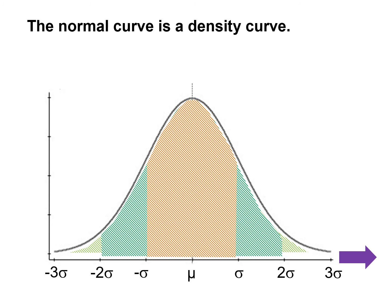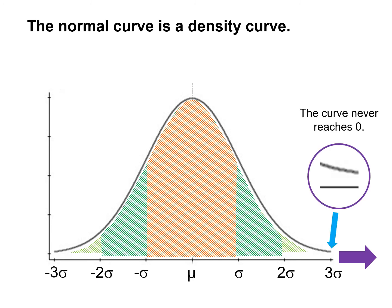It is possible for observations to fall more than three standard deviations away from the mean. It should be noted that even as the curve moves further from the mean, it never reaches 0 — or visually, the line never touches the x-axis. The probabilities are very small at this point; outside four standard deviations of the mean, the probability is somewhere around 6 over 100,000. Now let's see those concepts in an example.